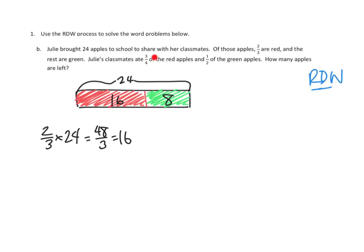Julie's classmates ate three-fourths of the red apples and one-half of the green apples. So they ate three-fourths of the red apples. So I'm just going to say ate three-fourths of the red apples, 16. And what is 3/4 times 16? Well, one thing,